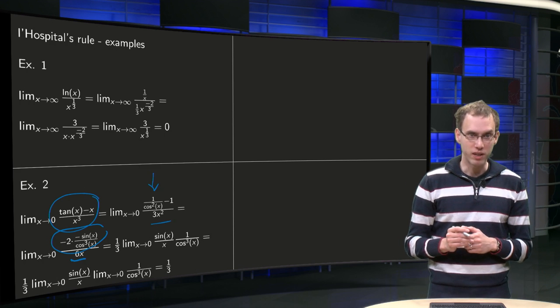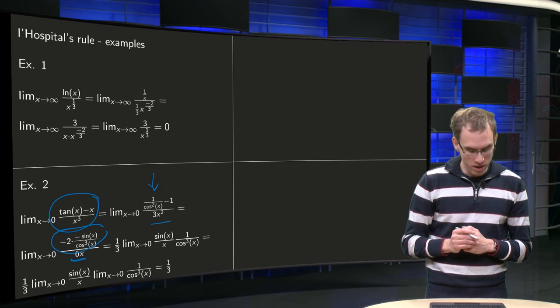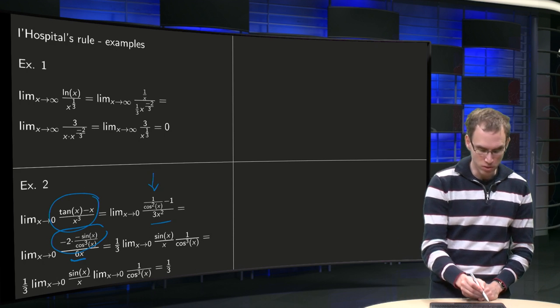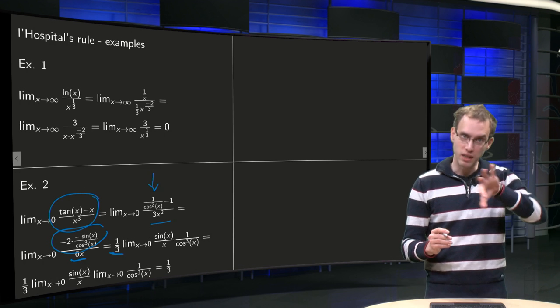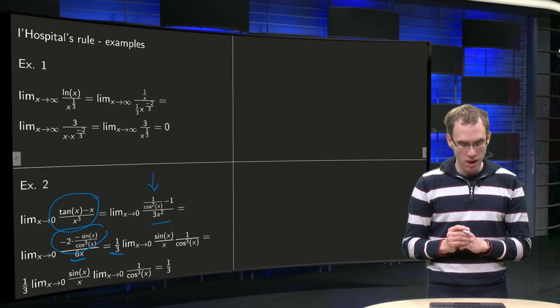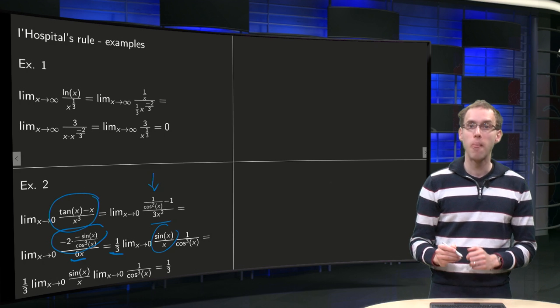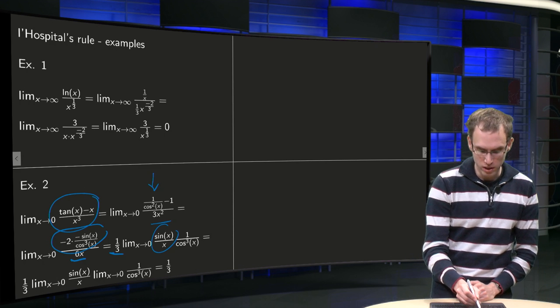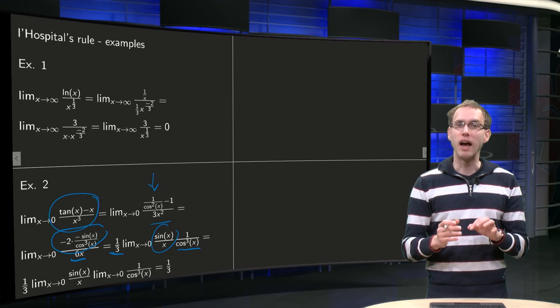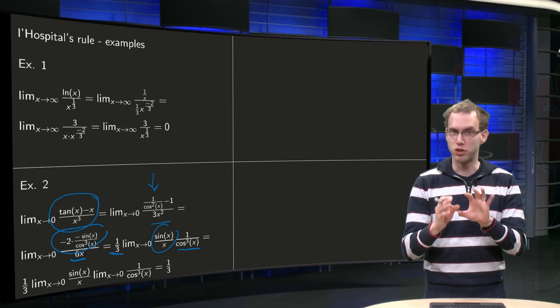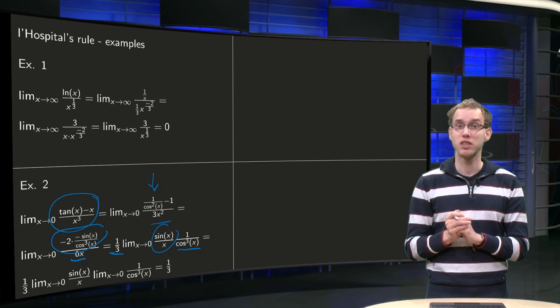And then we can simplify a bit. Then we get minus 2 times minus 1 over 6 equals 1/3, so take that constant factor out. We get sin(x) over x, and we have that over cosine x to the power of 3. And now we have to look a bit again. The cosine x to the power of 3 is fine, and for x to 0 that's just 1.